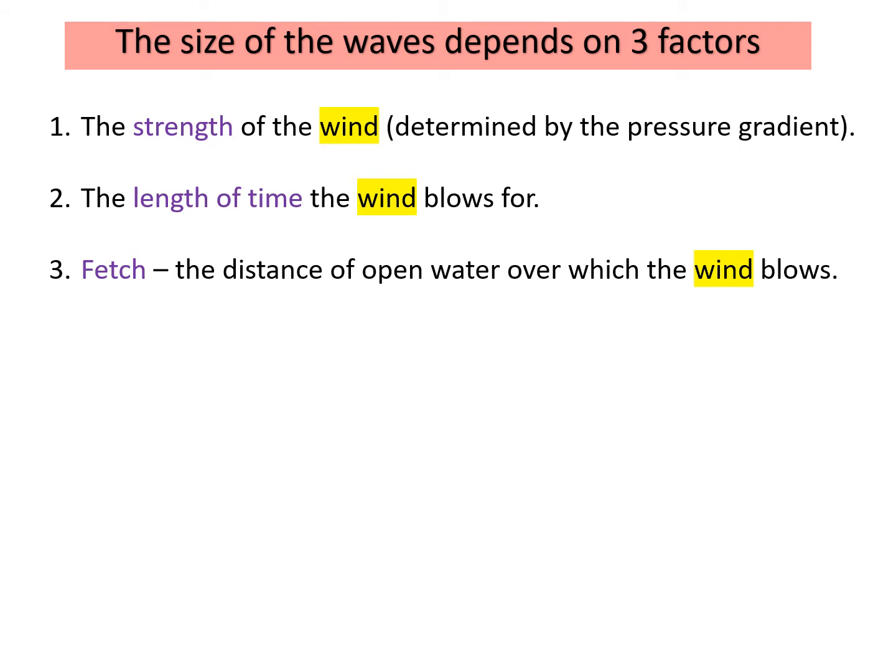The second factor is the length of time that the wind blows for — the longer the wind blows, the more powerful and larger the waves will be. The third factor is fetch: the distance of open water over which the wind blows. The longer the fetch, the more powerful the waves. The longest fetch in the UK is over 3,000 miles across the Atlantic Ocean to Brazil, which is why the southwest of the UK gets powerful waves — that's why people love surfing in Cornwall.